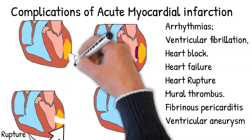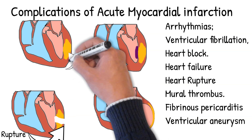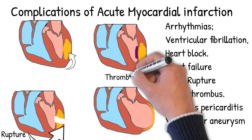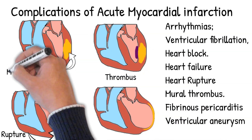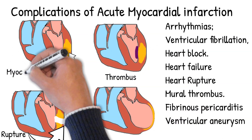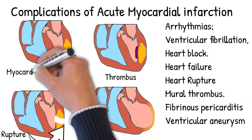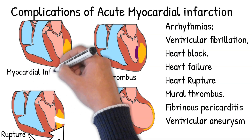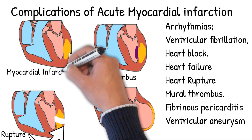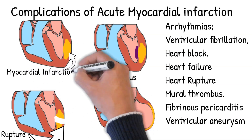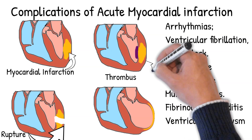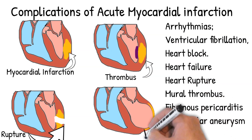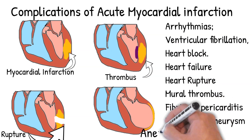Heart rupture is most likely to occur between days 3 and 7 (range: 1–10 days); anterior wall rupture is the most common and results in cardiac tamponade. Other complications include mural thrombus, fibrinous pericarditis with or without effusion, and ventricular aneurysm.